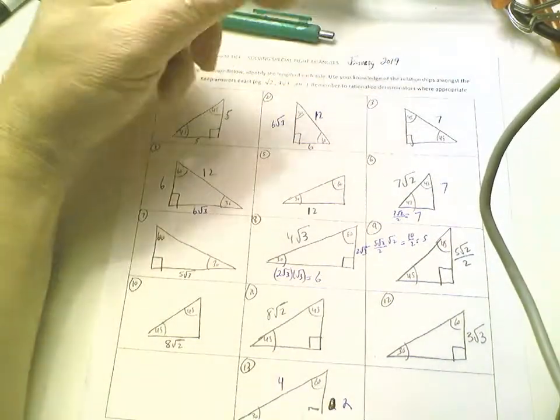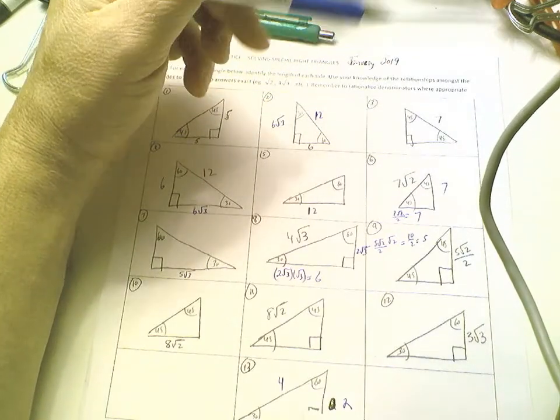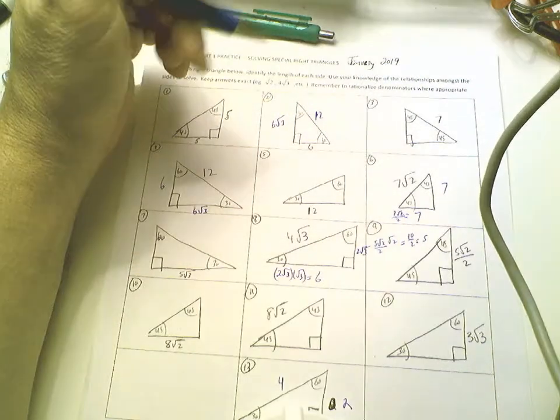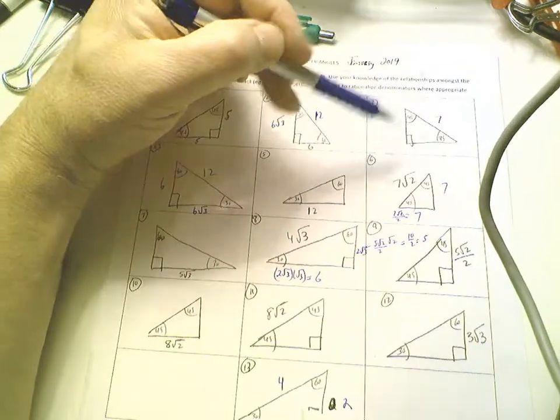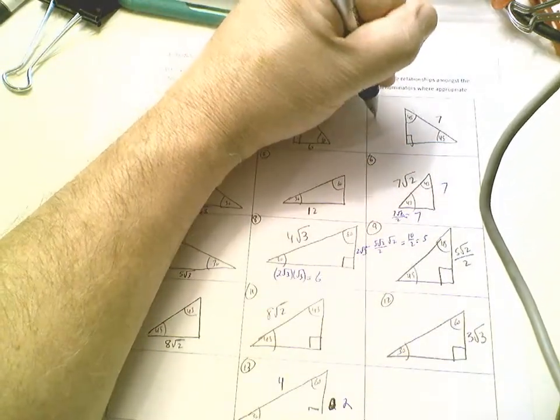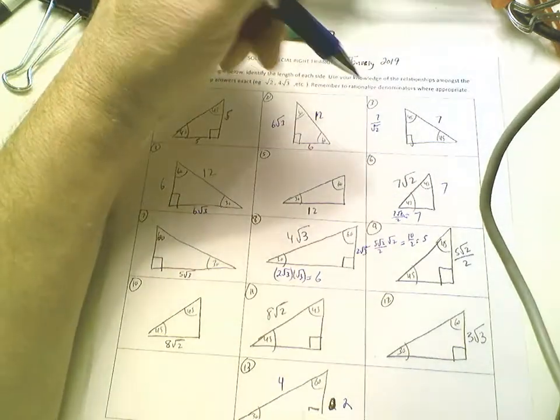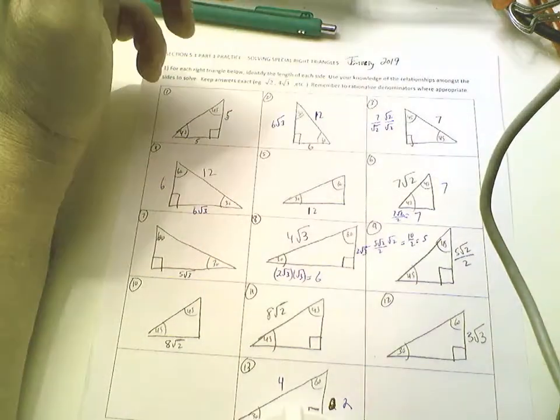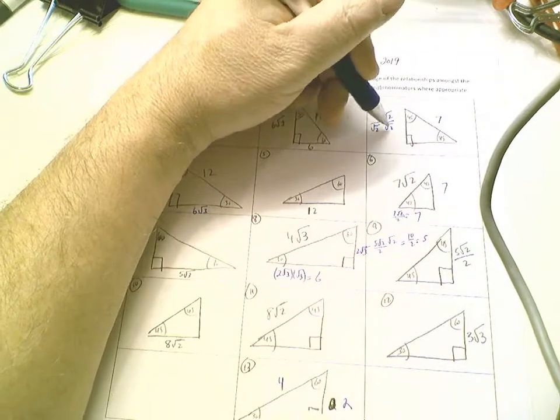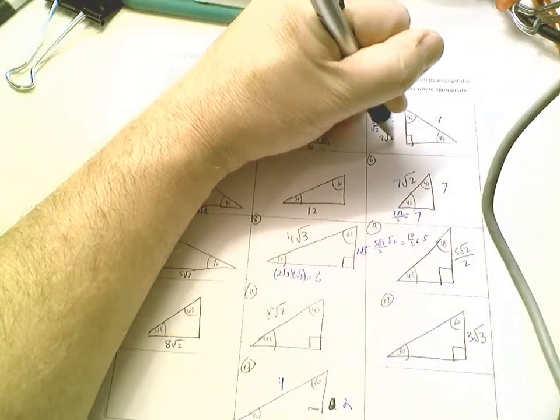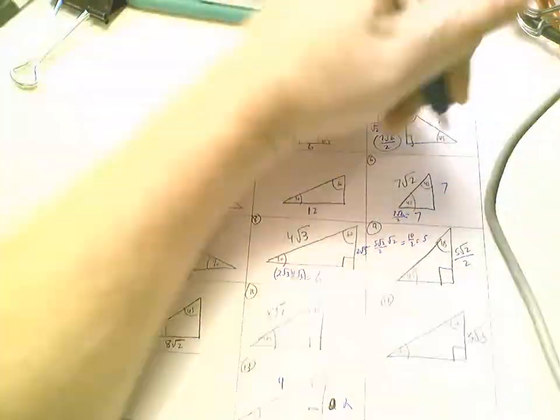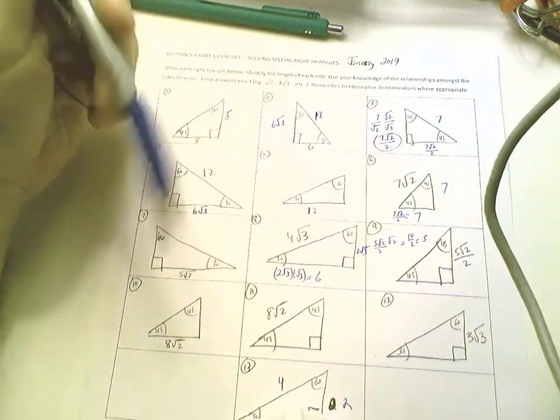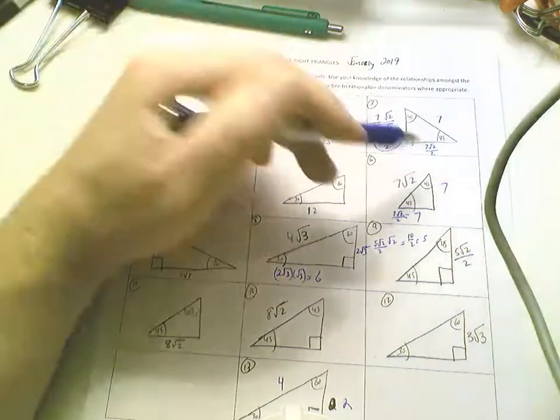I have a hypotenuse that's 7. To get from the 45 degree side to the hypotenuse, you multiply by square root of 2. I need to divide by square root of 2. 7 over the square root of 2. I need to rationalize this by multiplying top and bottom by square root of 2. 7 the square root of 2 over 2. For the time being, we're going to stay with exact answers. As we move forward, we'll go to calculator-based solutions.